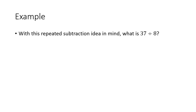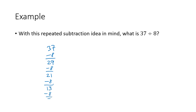So how does this work as repeated subtraction? When the numbers are small, we can just do this directly. We can take 37 and just subtract 8, and that gives us 29, and we still have more 8s that we can subtract. So we subtract 8 again, we get 21. We subtract 8 again, we get 13. We subtract 8 again, and we get 5.